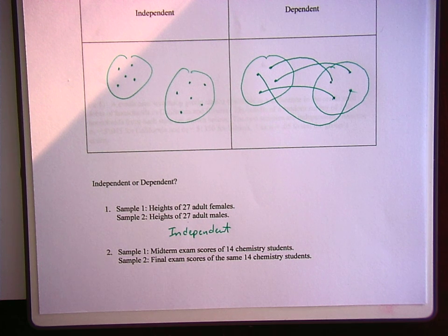The next one is midterm exam scores of 14 chemistry students and then final exam scores of the same 14 chemistry students. That word is important though, same. Okay, the same people. So, like for example, if I was in Ms. Zink's chemistry class and whatever I got on my midterm would be compared to whatever I got on my final exam. And that would be a one-to-one, so that is dependent.